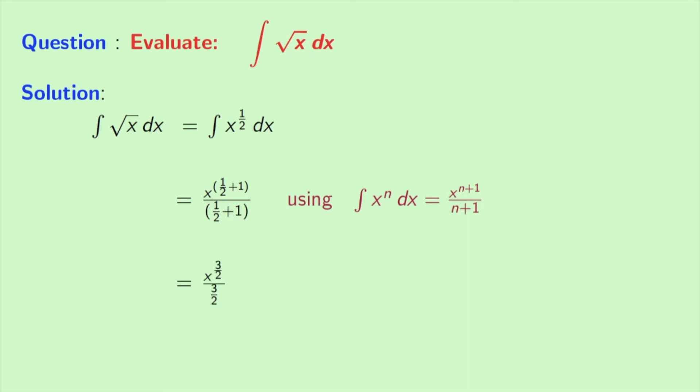Now again by simplifying the numerator we have x power 3 by 2, as we know that half plus 1 is equal to 3 by 2. In the denominator also we have 3 by 2 in the same way.